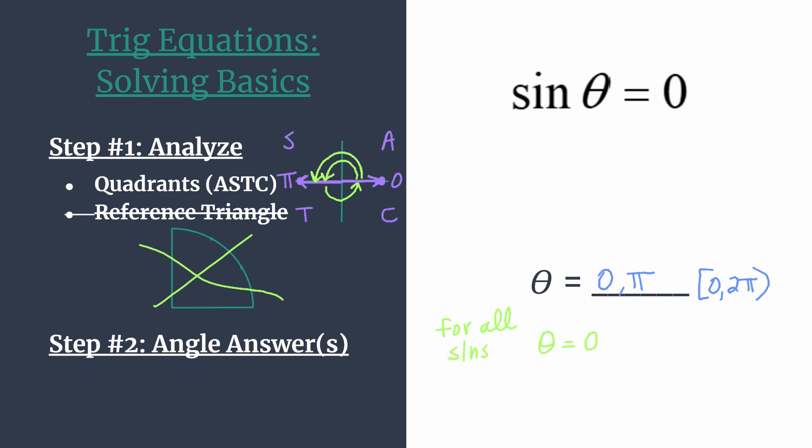So instead of our usual plus two pi k, we can say zero plus pi k, which basically comes down to plus every half rotation. Remember k is an integer when we use this equation for expressing a solution. K just represents any integer. So as you substitute in different integers, you'll get a different solution. But this equation by itself represents all solutions for sine theta equals zero.